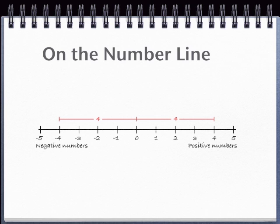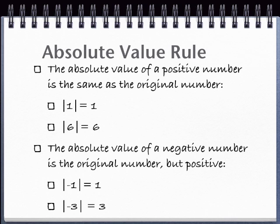Since direction doesn't matter for absolute value, the absolute value of both 4 and negative 4 is 4. You can generalize this. The absolute value of a positive number is the same as the original number. So, the absolute value of 1 is 1, absolute value of 6 is 6.